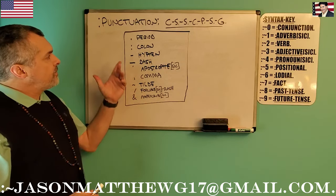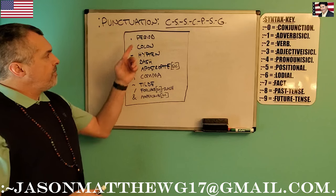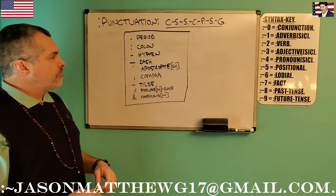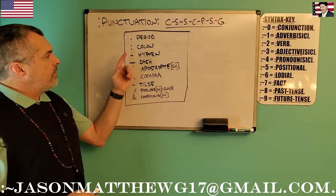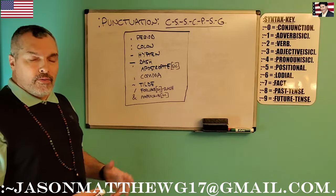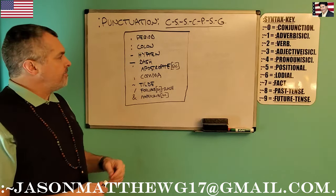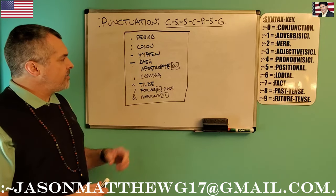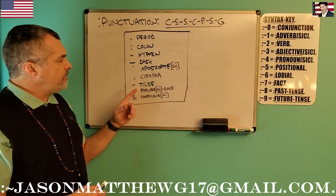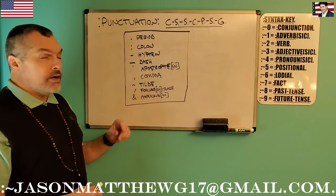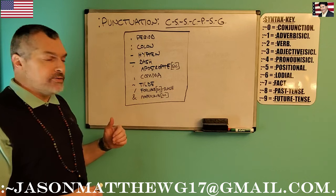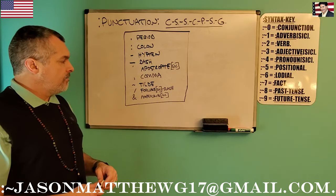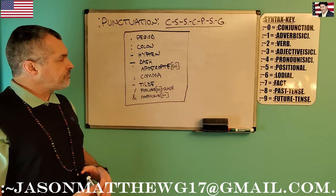So the first one, in no particular order: we have the period, the full stop. Now we have a colon, or full colon. We have a hyphen. We have a dash. Apostrophe. Comma. Tilde. And forward slash and ampersand.